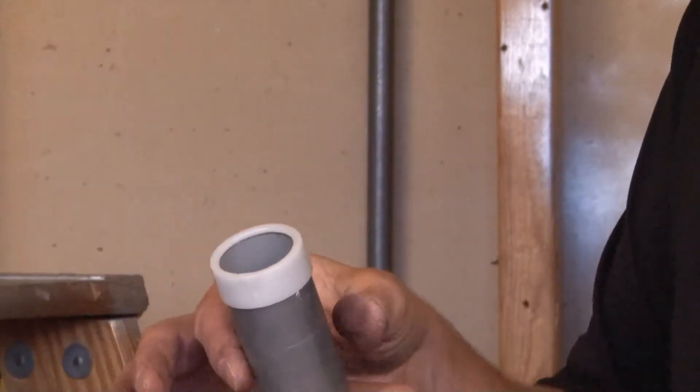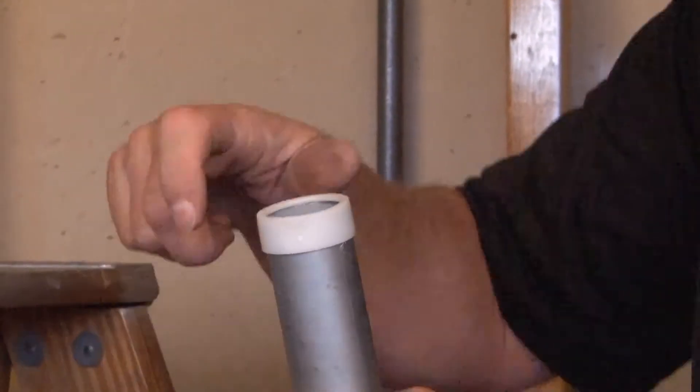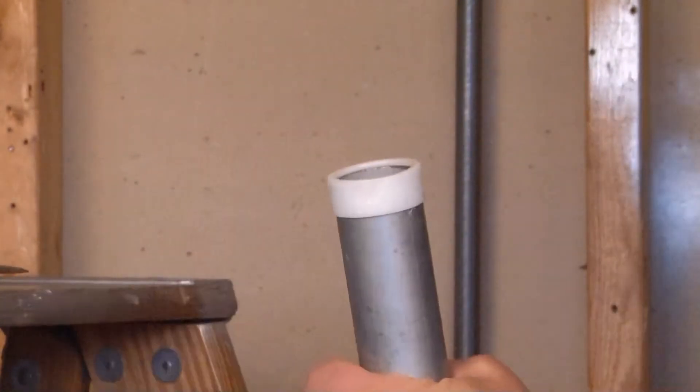The inner ribs lock securely on the outside of the EMT conduit and it's not going to come off.